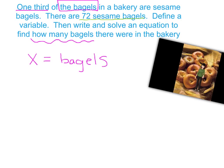Now let's write the equation. We have one-third — that's the fraction one-third — and the word 'of' means multiply. So one-third times the number of bagels in the bakery, which is our variable, so one-third times x. And they're saying there are 72 sesame bagels, and one-third of the total is 72, so that's your equal sign: one-third times x equals 72.